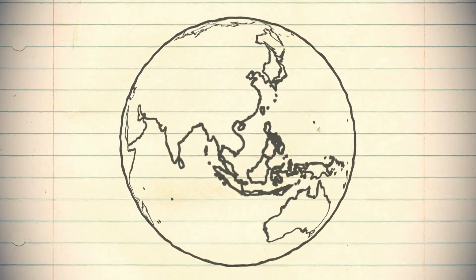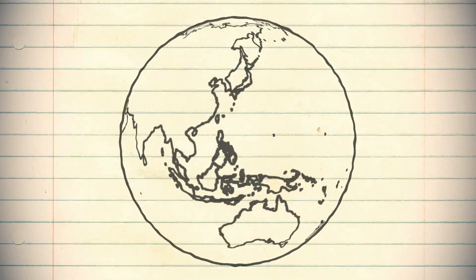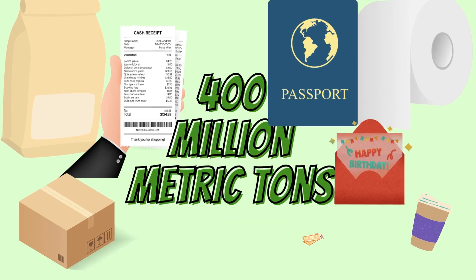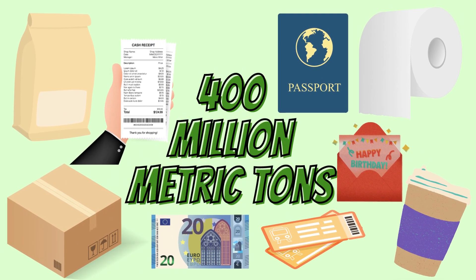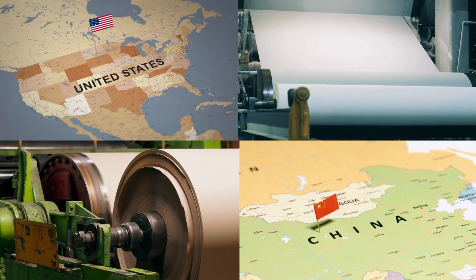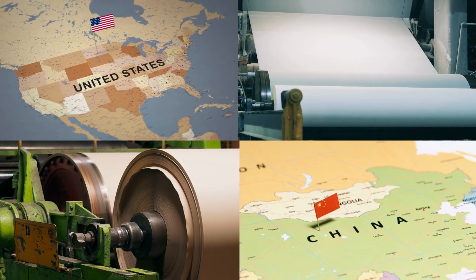The role of paper has changed thanks to the enhancement of the digital age; however, it is still valued across the world. Each year, an average of 400 million metric tonnes of paper and wood is produced, primarily from the United States and China. So we know where in the world produces the most amount of paper — but is it just trees, and what type of trees are used?